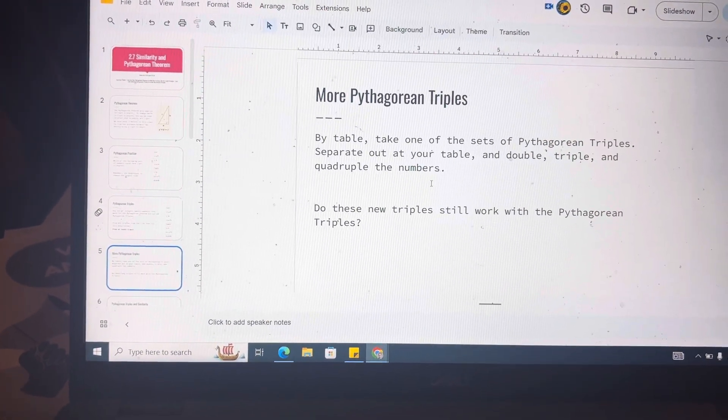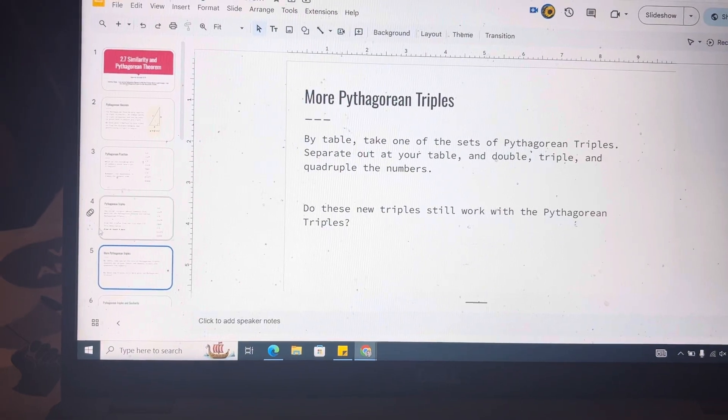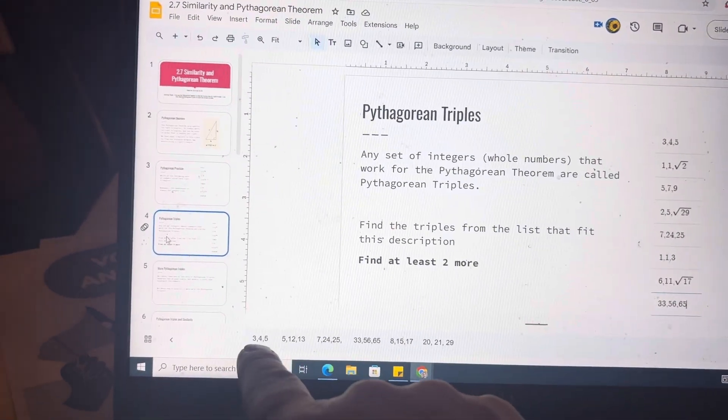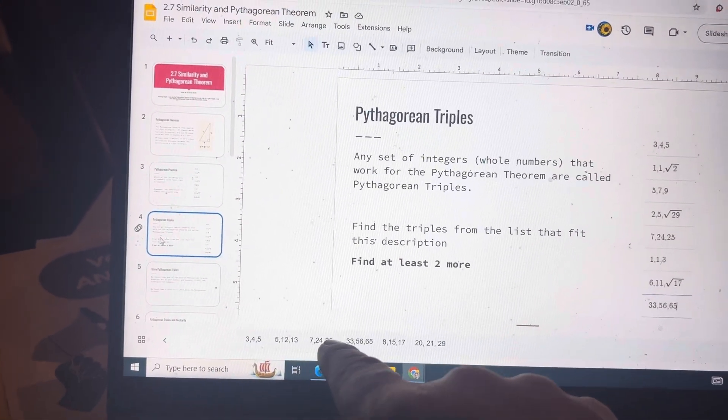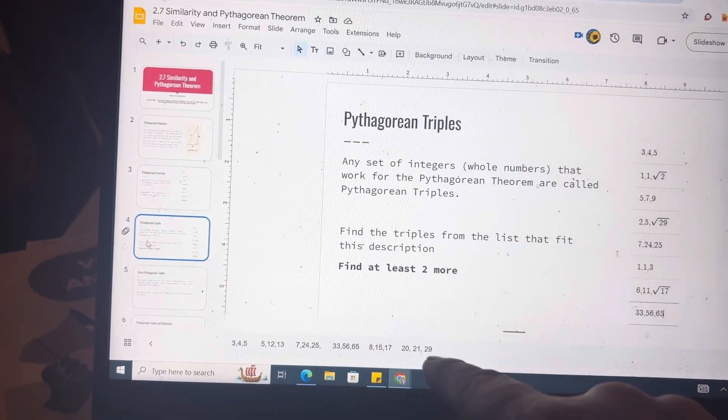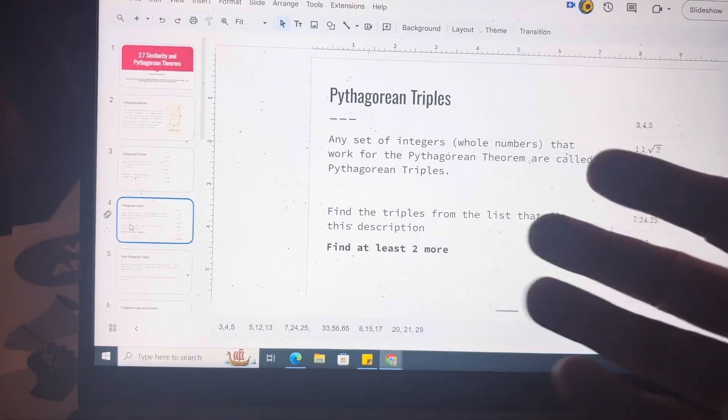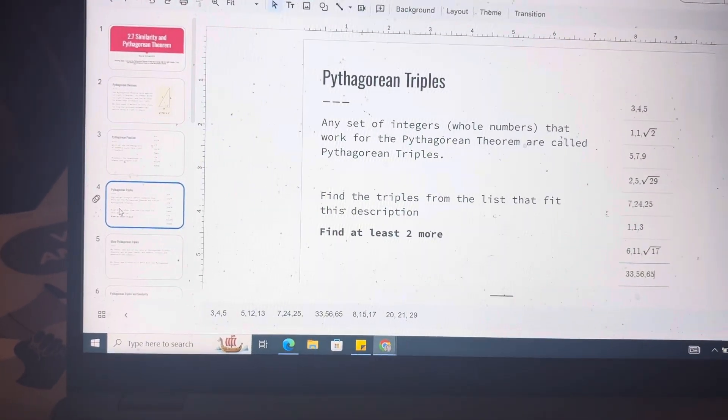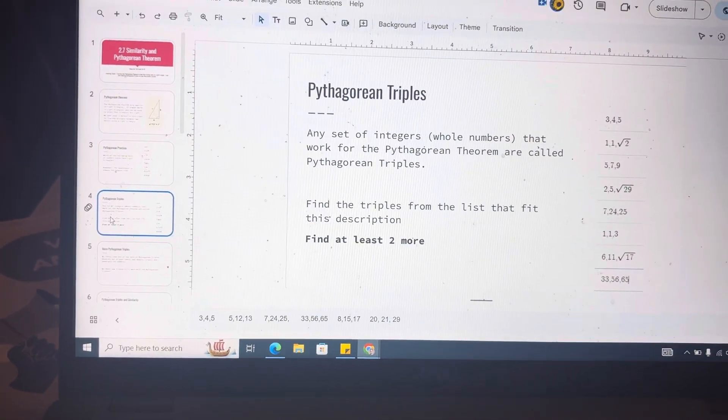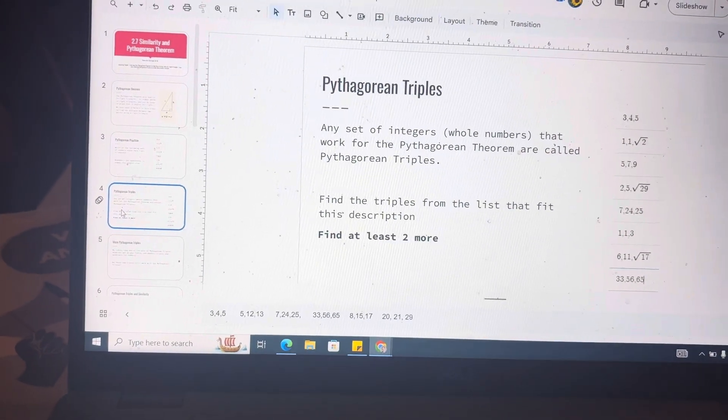Then we talked about some different Pythagorean triples and the way that you can take like these 3, 4, 5, 5, 12, 13, 7, 24, 25, 8, 15, 17, 20, 21, and 29, especially. And like multiplying by 2, multiplying by 3, multiplying by 4, and still come up with Pythagorean triples.